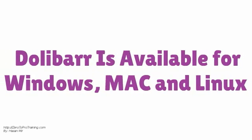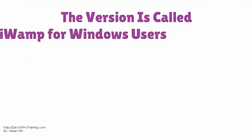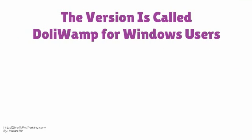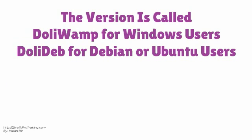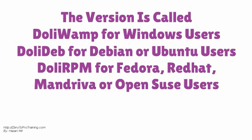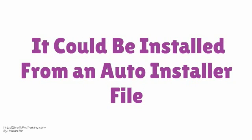Dilibar is available for Windows, Mac, and Linux. The version is called Deliwomp for Windows users, DeliDeb for Debian users, DeliRPM for Fedora, Red Hat, Mandrake, or OpenSUSE users, and DeliMump for Mac users. It could be installed from an auto installer file.